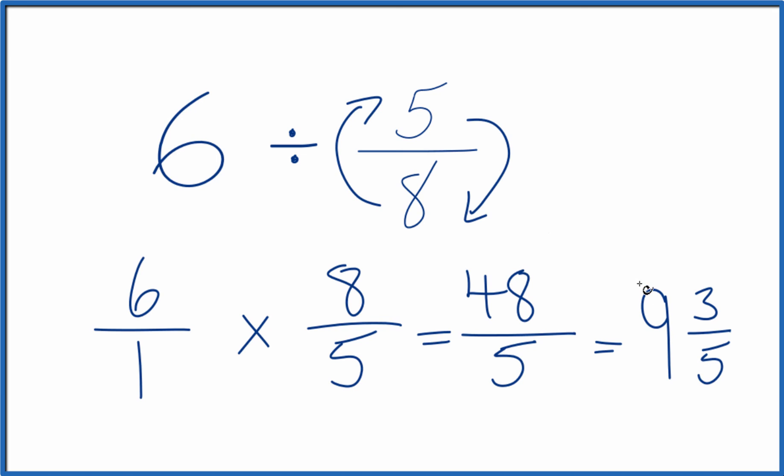So in answer to our question, 6 divided by 5 eighths equals 48 over 5, or as a mixed number 9 and 3 fifths.